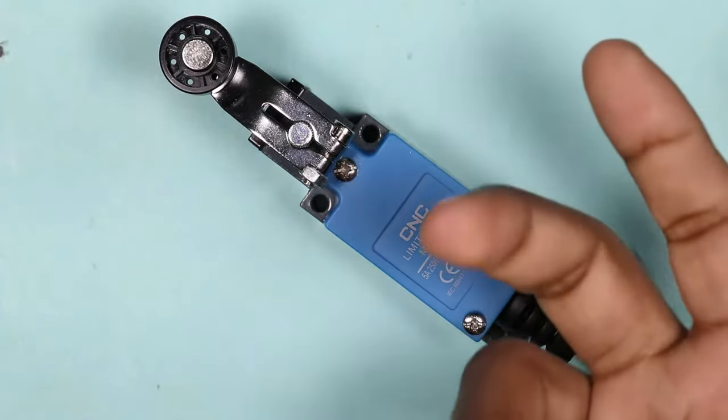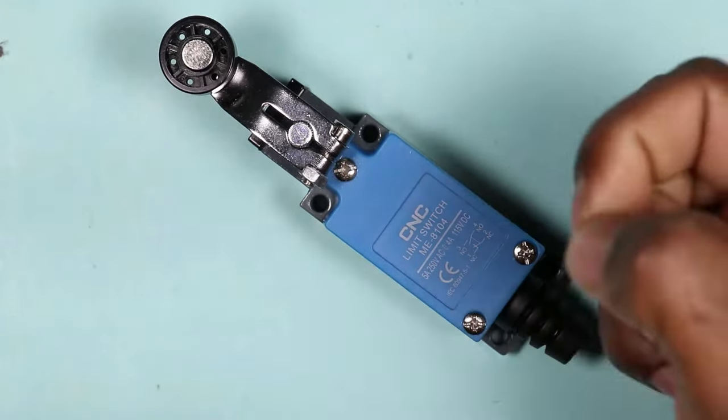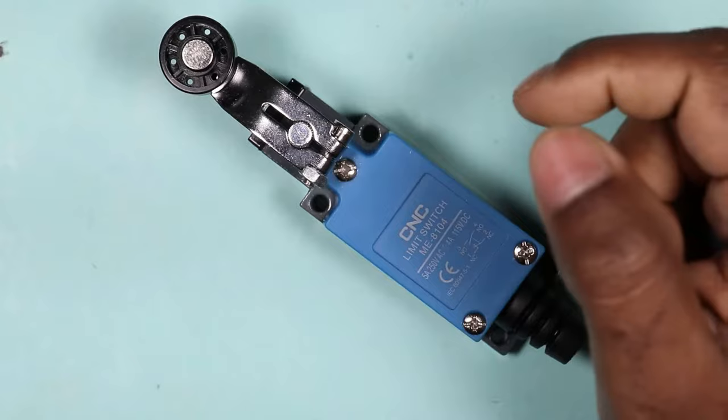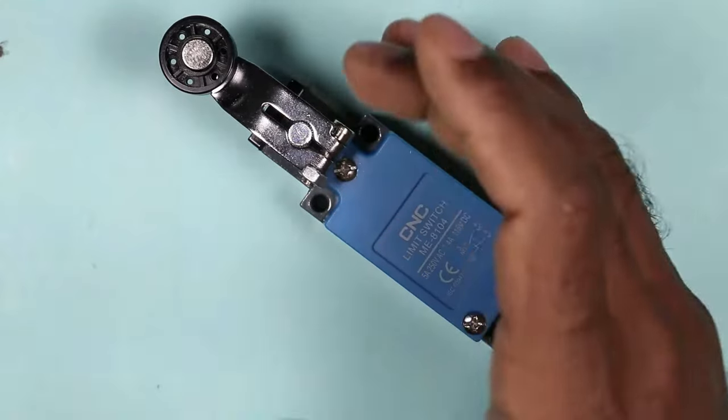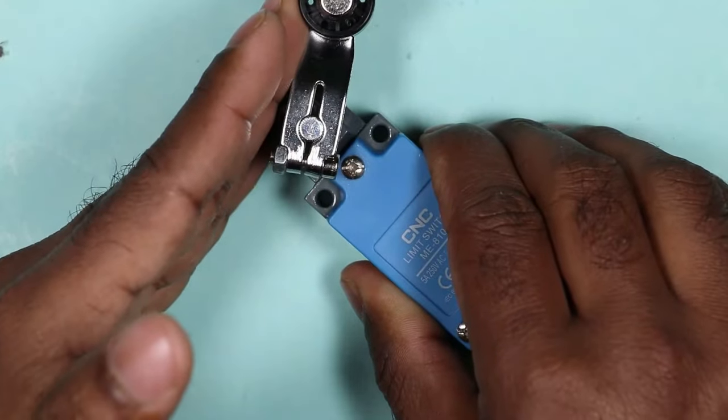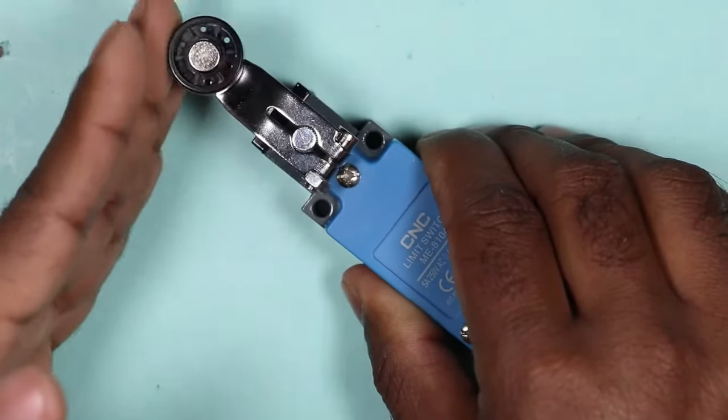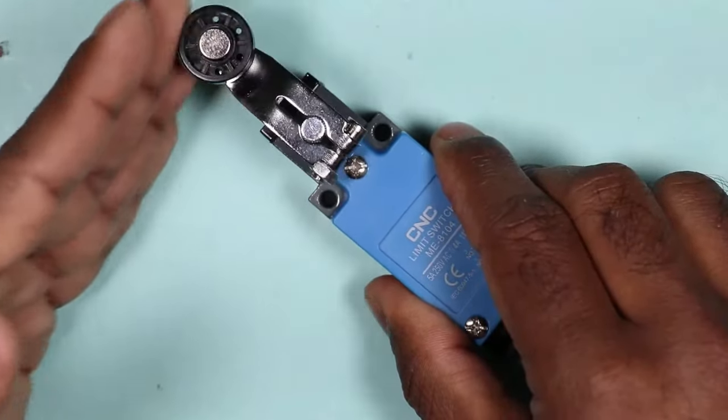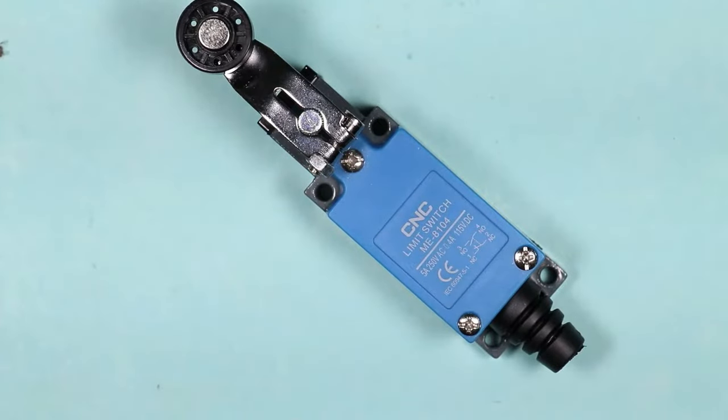One thing you should keep in mind is that we can only use this switch in places where some motion is present. By the help of that motion, this switch will operate when comes in contact. If no movement is present in your application, then you cannot use this limit switch with that application.